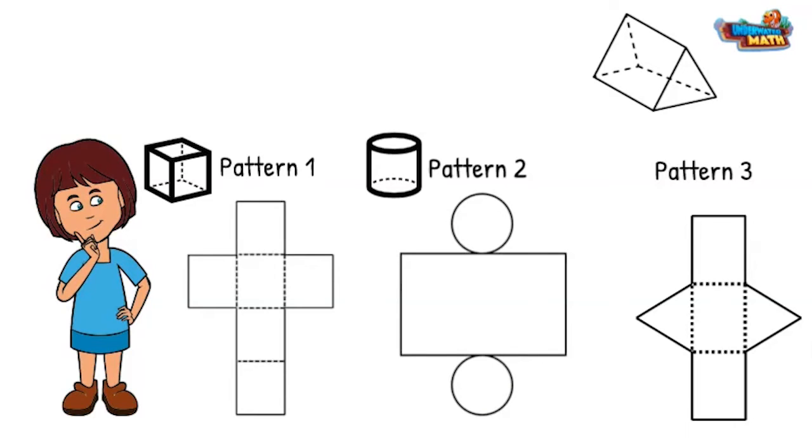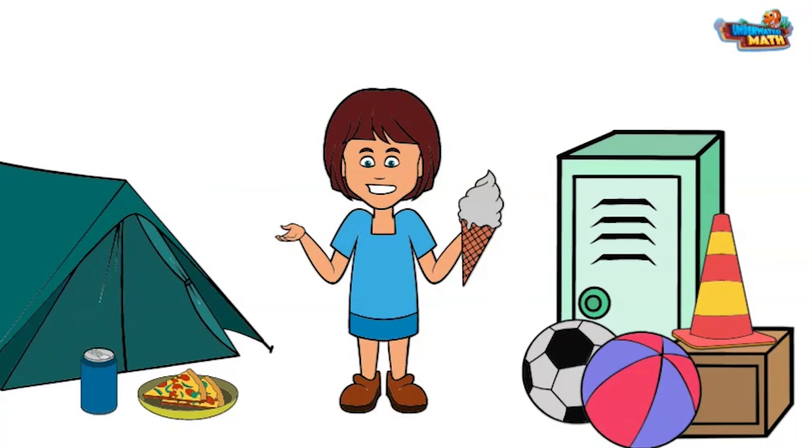It has two circular faces. The large rectangle will curve around the circle faces to create a curved surface. Pattern three has two triangular faces and three rectangular faces. This pattern would make a triangular prism.